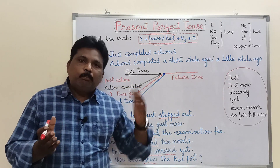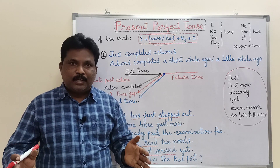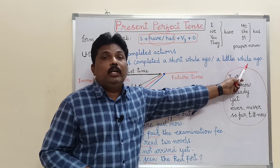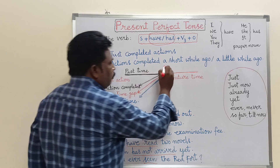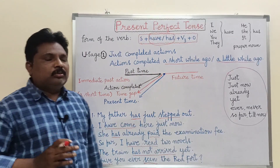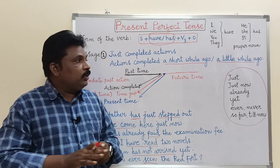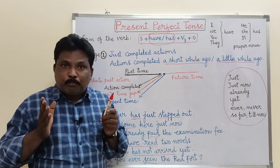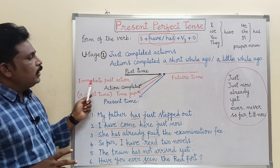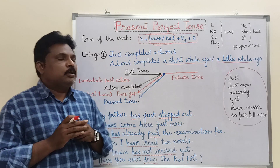When an action is completed, it is understood that it is a past action. But this action was completed a little while ago or a short while ago. This is called an immediate past action. The time gap between the occurrence of the action and the present point is very, very little time.